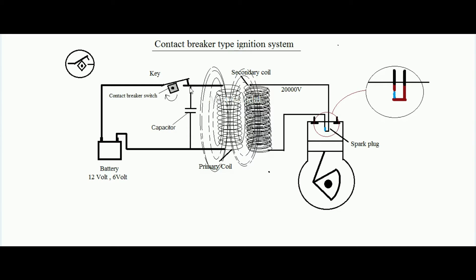Since the capacitor charges slowly — taking some time compared to having no capacitor — the current development is smooth. This reduces the tendency of spark formation between the contacts of the contact breaker switch, thereby increasing the longevity and life of the contact breaker switch.